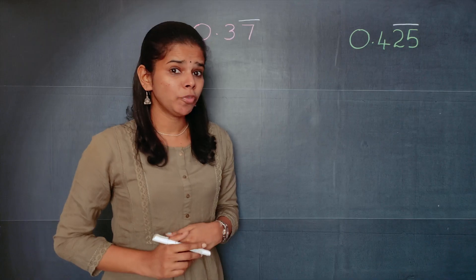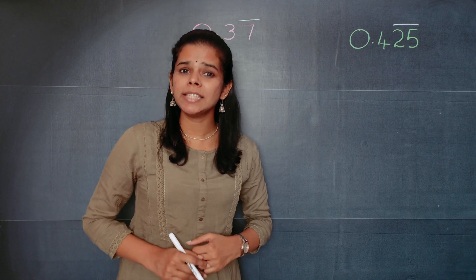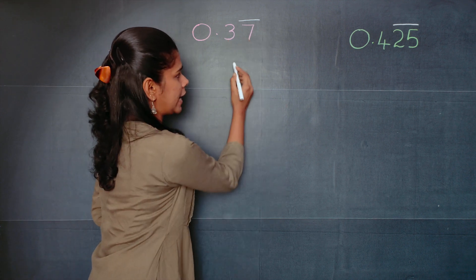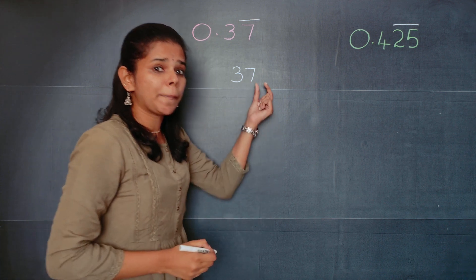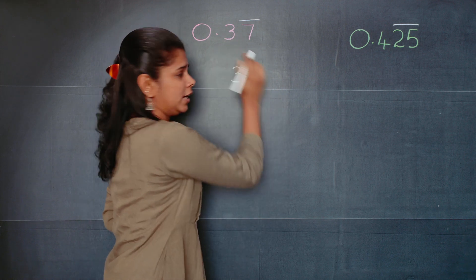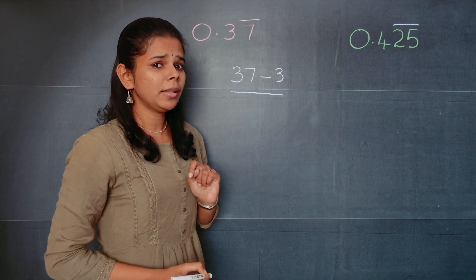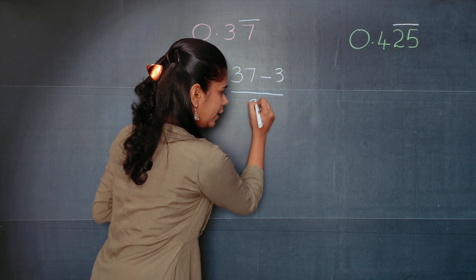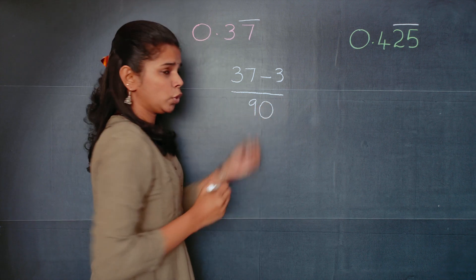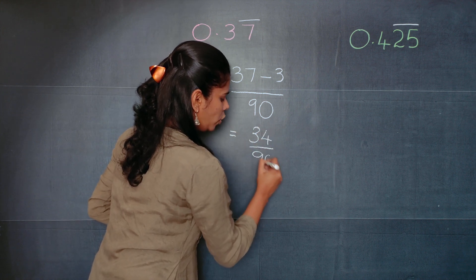In the second type, as you have noticed, after the decimal point not all the numbers are under the bar. So in this case, you will write the number as such — 37 — then subtract the number that is not under the bar, which is 3. So you write 37 minus 3, divided by: one number under the bar gives 9, and one number not under the bar gives a 0. So it is 37 minus 3 by 90, which equals 34 by 90.